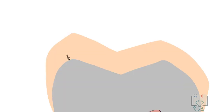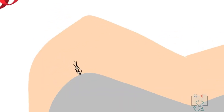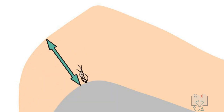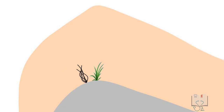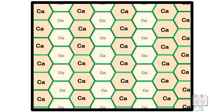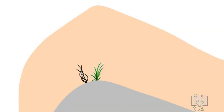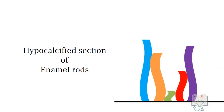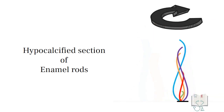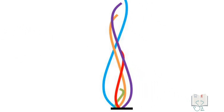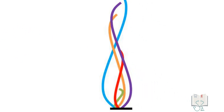Enamel tufts are ribbon-like structures extending from the dentino-enamel junction to one-fifth to one-third of the distance to the enamel surface. They are so termed because collectively they appear similar to a tuft of grass. They represent hypocalcified enamel rod sections. The term 'tuft' actually gives a somewhat misleading picture, as these hypocalcified structures are adjacent to each other, but when viewed in a thick section from a different angle they overlap and appear to originate from a single point like a tuft of grass.